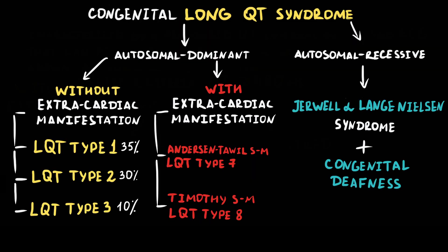Long QT syndrome can be congenital and acquired. Congenital long QT syndrome type 2 refers to autosomal dominant congenital long QT syndromes without extracardiac manifestation. It is the second most prevalent congenital long QT syndrome, just after type 1, and accounts for approximately 30% of all cases.